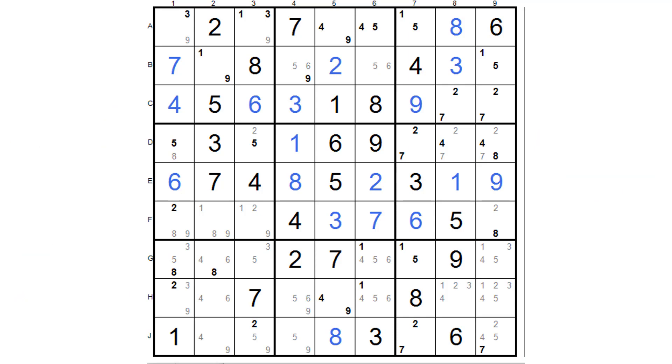Now what Glenn suggests you do is you circle every cell that just has a pair in it, and that's a great idea because it sort of focuses the mind, so that's the first thing we do.